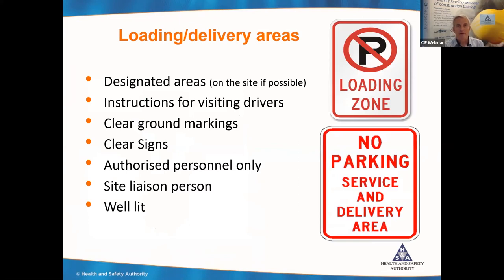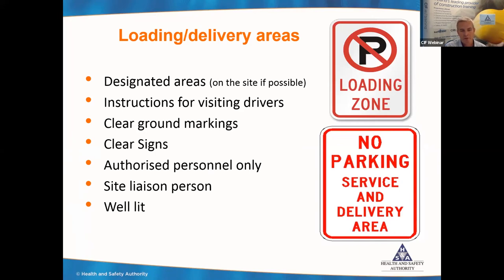In terms of the site itself, loading and delivery areas should be prioritized — there should be designated areas if possible. I accept that's not always possible on restricted sites, but if there is the possibility of a designated loading and unloading area, that should be put in place. There should be clear instructions for visiting drivers so when they arrive they know exactly what to do. Clear ground markings and signs if you have the designated area. Authorized personnel only on site. A site liaison person to meet every delivered load is a very good idea. The designated loading and unloading area should be well lit — particularly important coming into winter with deliveries early in the morning or later in the evening in darkness.